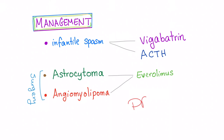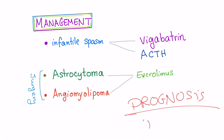The prognosis of tuberous sclerosis depends on the symptoms. Because of variable expressivity, prognosis is variable. The most common causes of death are renal disease, brain disease, and the lung condition LAM — lymphangioleiomyomatosis. These are the main causes of death in tuberous sclerosis.